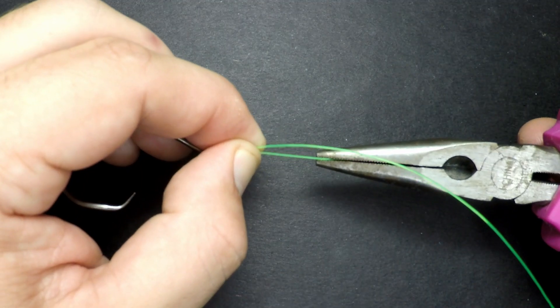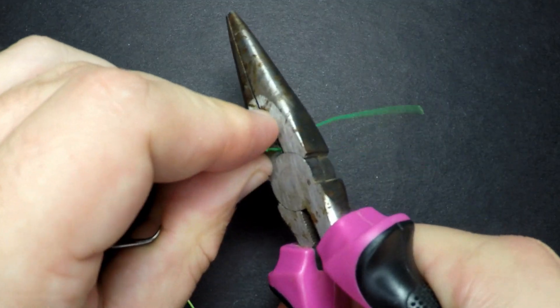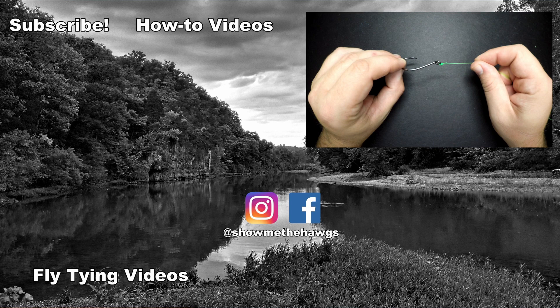Now I'm going to hold down the knot and pull on the tag end one last time. Give the main line one final pull, trim the tag end, and that completes our uni knot.